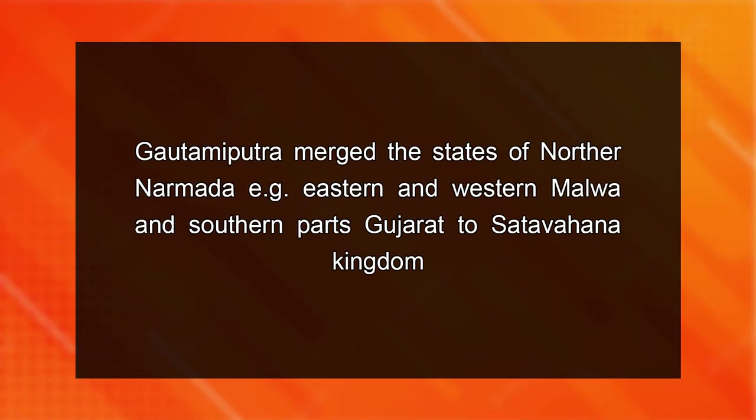It was only Gautamiputra Satakarni who merged the states of northern Narmada — eastern and western Malwa and southern parts of Gujarat — into the Satavahana Kingdom. This was the first time in the history of the Deccan that the rule of the Deccan was expanded beyond the Narmada river, usually known as the northern border of the Deccan.